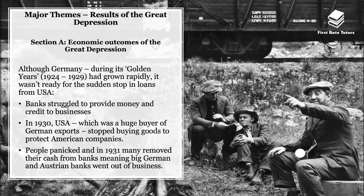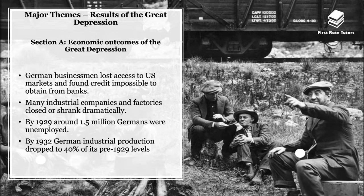Banks in Germany struggled to provide money and credit to businesses. In 1930, the USA, a huge buyer of German exports, stopped buying goods to protect American companies. In 1931, many Germans panicked and removed cash from banks, causing major German and Austrian banks to go out of business virtually overnight. German businessmen lost access to US markets and found credit impossible to obtain. Many industrial companies and factories closed or shrank dramatically, and by 1932 German industrial production dropped to 40% of its pre-1929 levels.